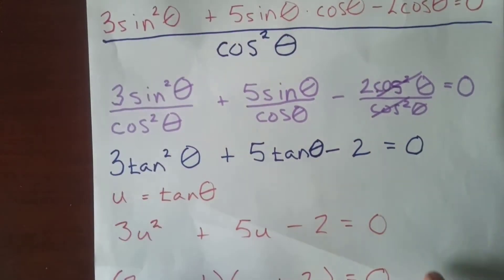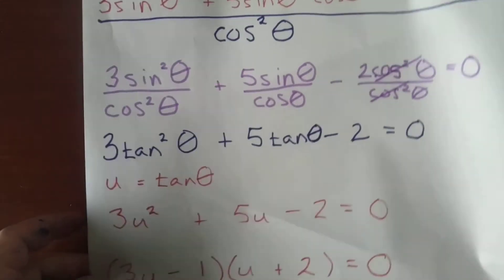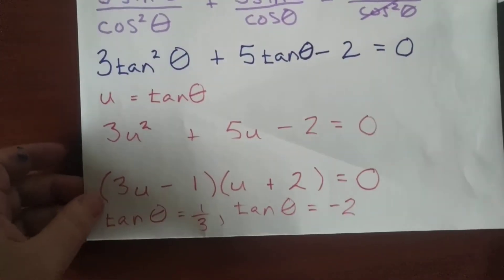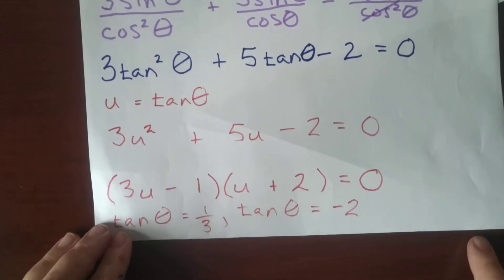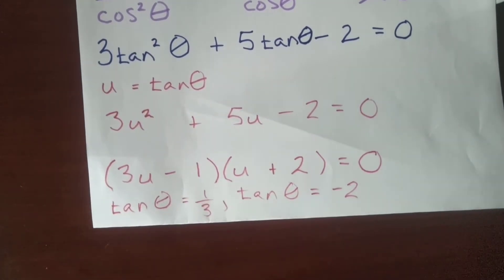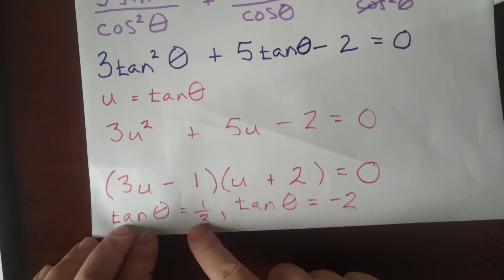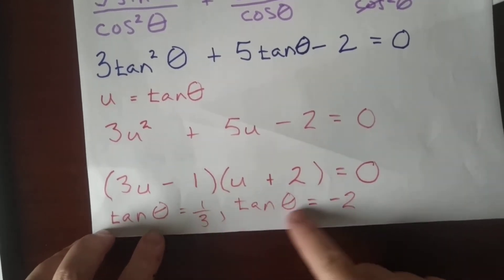And part B says solve for theta. That's what we're in the process of doing now, so that's what's in red. We're trying to determine what theta is, and it has to be between zero and 180 degrees. So that's what we're doing at this point. And here's what we've got.